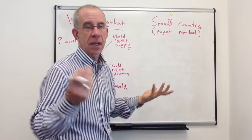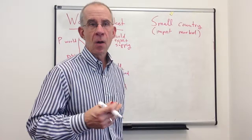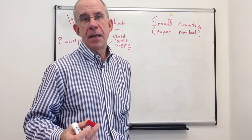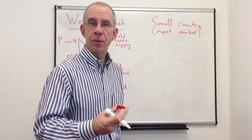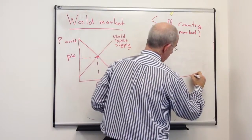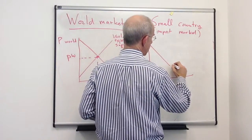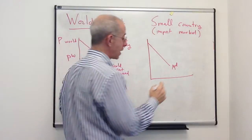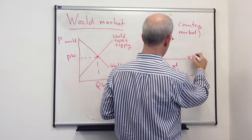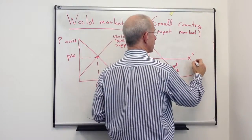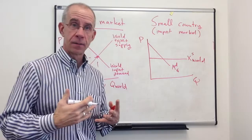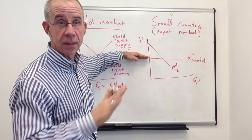So imagine the case of, say, Guatemala in international oil markets. Whether or not Guatemala buys more, produces more, does something internally, it is not going to have an appreciable impact on the international price of this product. So if we think about this from the import demand for Guatemala, they are going to be facing a perfectly elastic export supply curve in the world market. If you look at how much they demand, it's going to be for a given world price, take it or leave it.